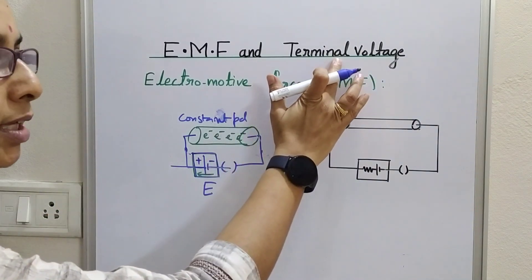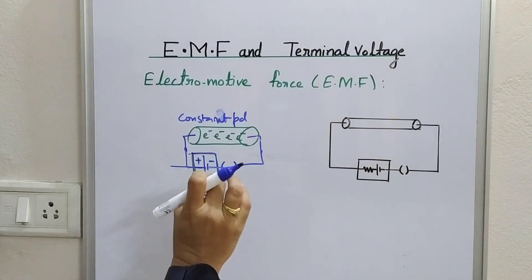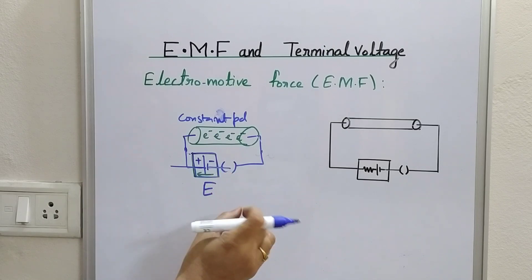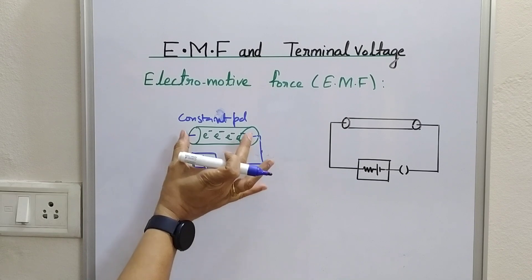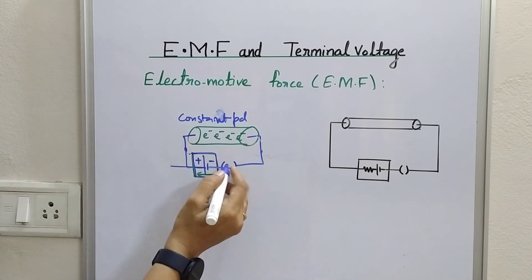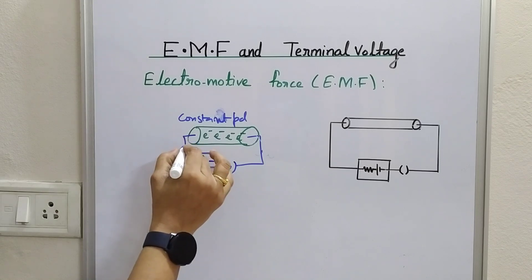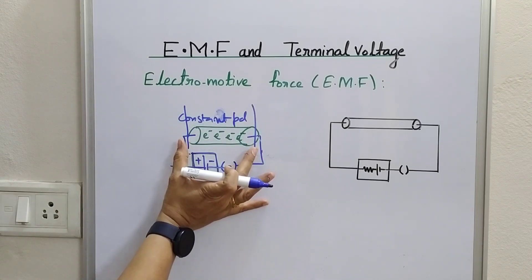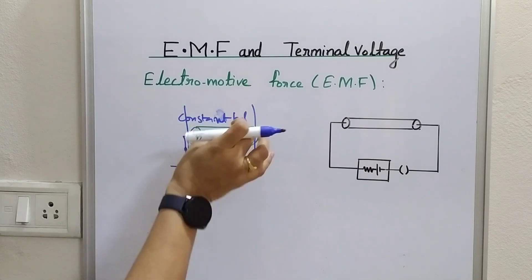Terminal voltage, or electric potential, is the potential difference across the ends of the conductor when the circuit is closed. In a closed circuit, whatever is the potential difference across the terminals or ends of a conductor is called the terminal voltage.